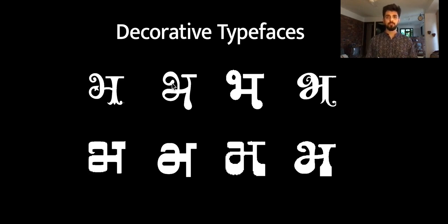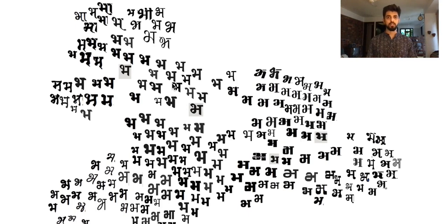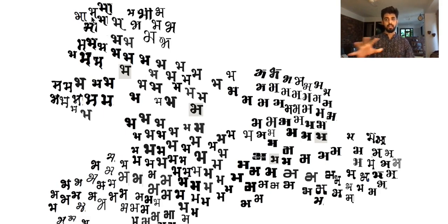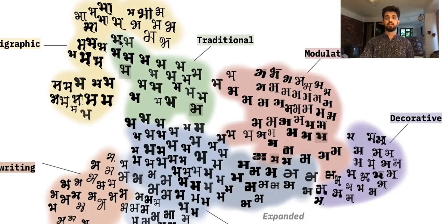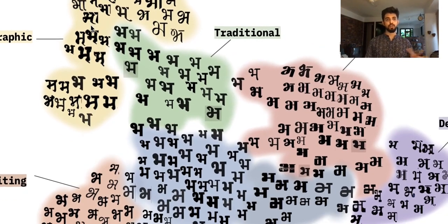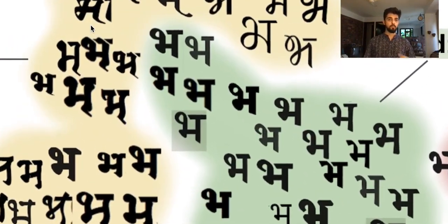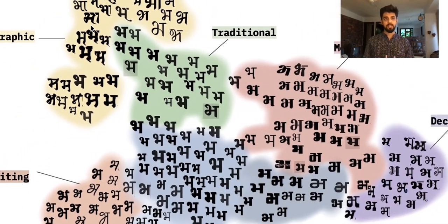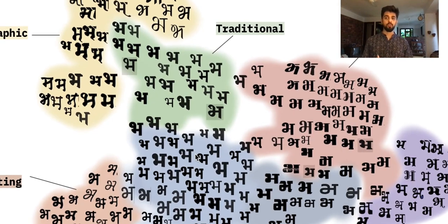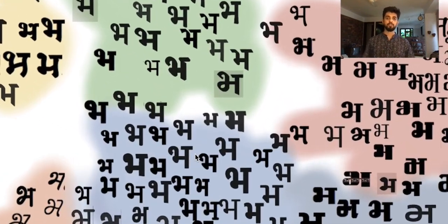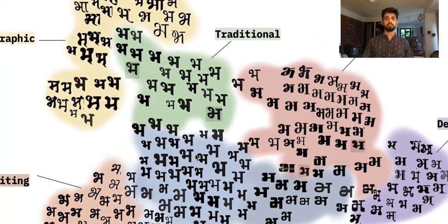I further went on to put these typefaces on a map so that they can be visually represented and I can identify how one category of typeface transitions into another. This is my exploration of a font map for Devanagari. If you observe carefully, we see all the different categories line up next to their closest relatives. We can see how calligraphic typefaces are much closer to traditional typefaces, similar to how calligraphic Latin typefaces are much closer to serif typefaces. Traditional typefaces evolve slowly into monolinear typefaces, and even within monolinear typefaces there can be different subsections.